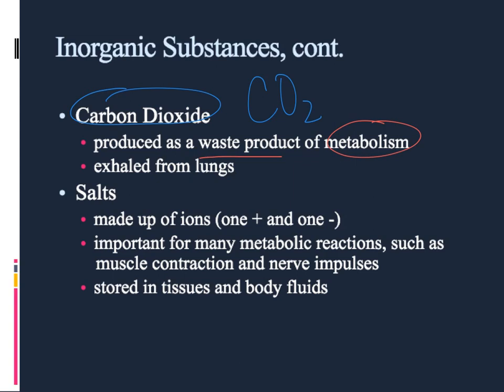The final inorganic substance we're going to talk about right now are salts — that's a very generic term. It might be sodium chloride, which is a common one — table salt — found in your body in great amounts. But it might also be salts that include magnesium or potassium or any number of other basic metals from the periodic table. We use all of those for muscle contraction and nerve communication because when they break up, they're all charged particles and help conduct electricity.